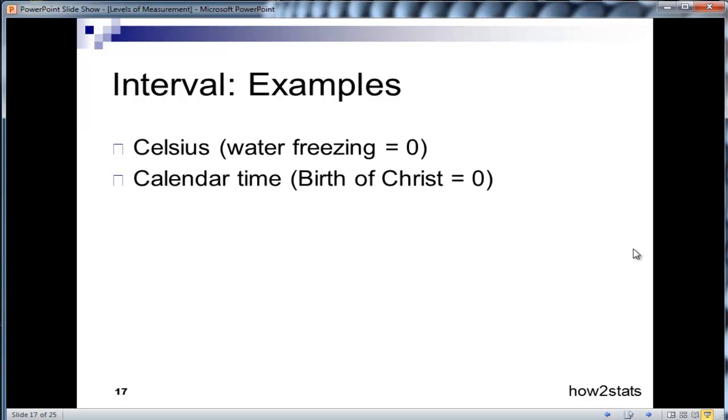Calendar time is another interval scale. The zero point is not meaningful. It's simply the birth of Christ. There was time before the birth of Christ. So the zero is not the absence of time. It's just arbitrarily determined as the birth of Christ.